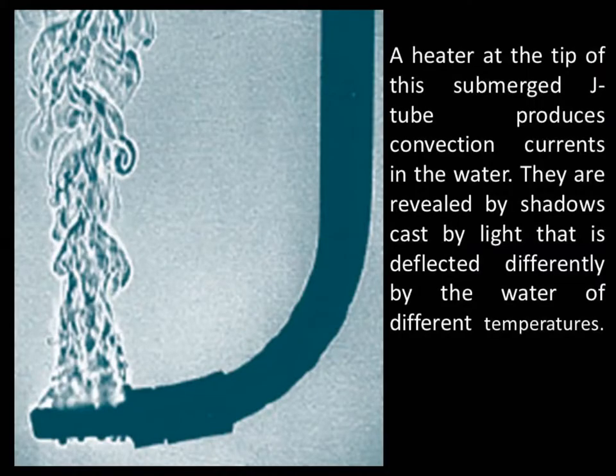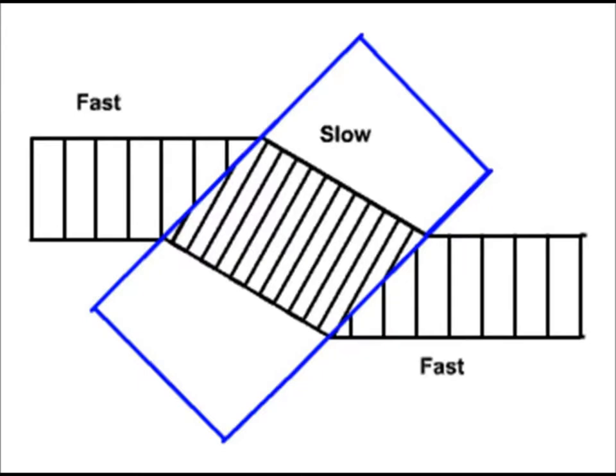A heater at the tip of this submerged j-tube produces convection currents in the water. They are revealed by shadows cast by light that is deflected differently by water of different temperatures. Different temperature water, different density. Remember the density of material will bend light differently.